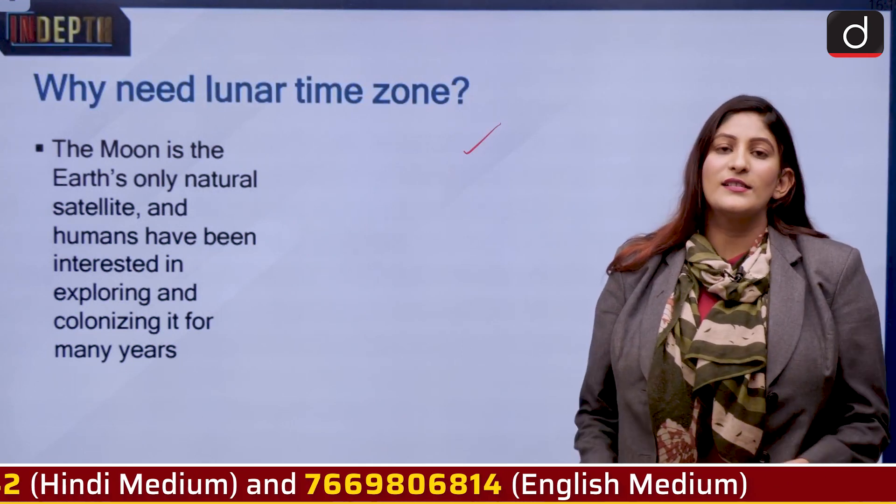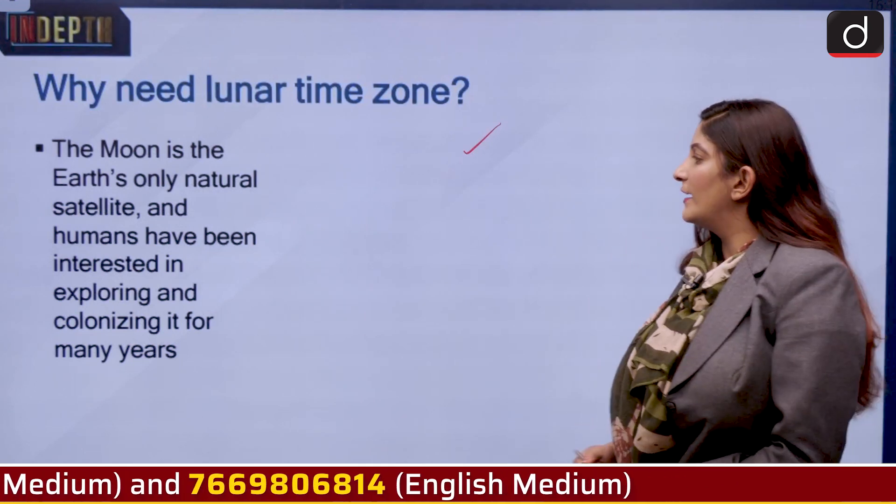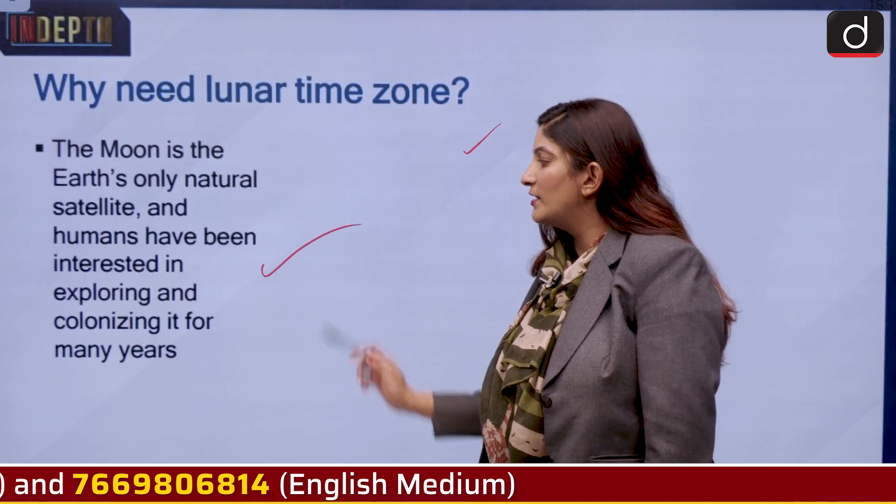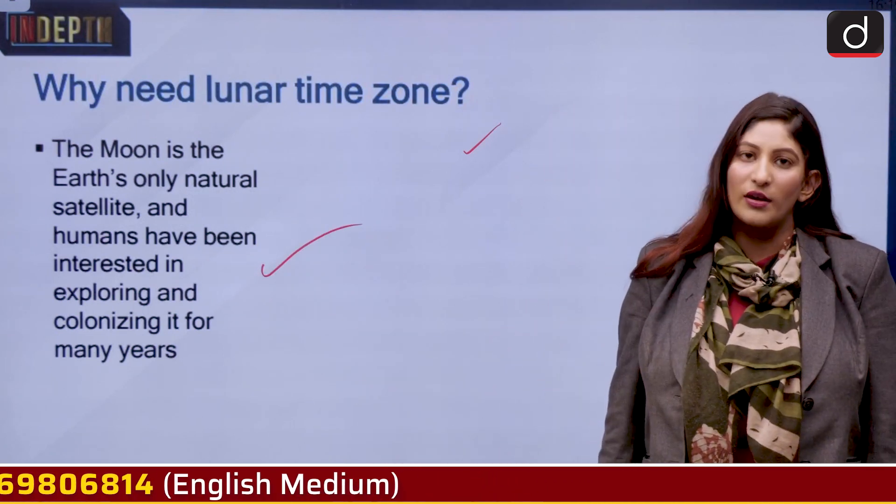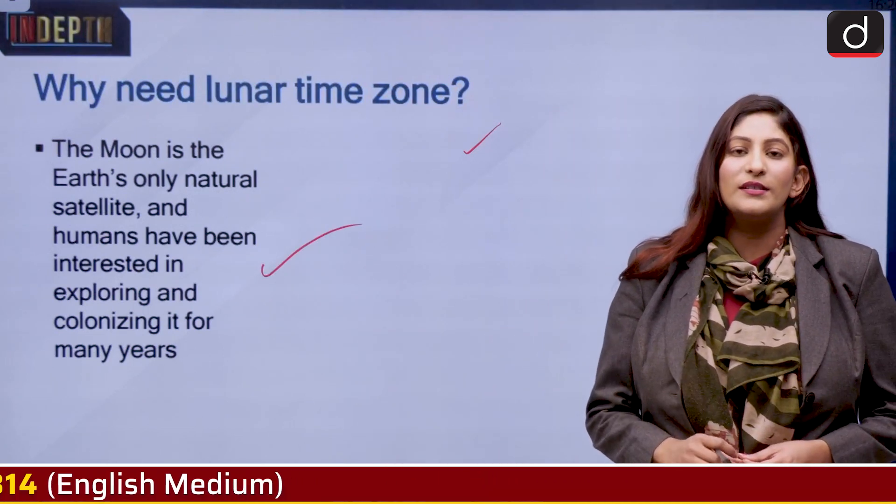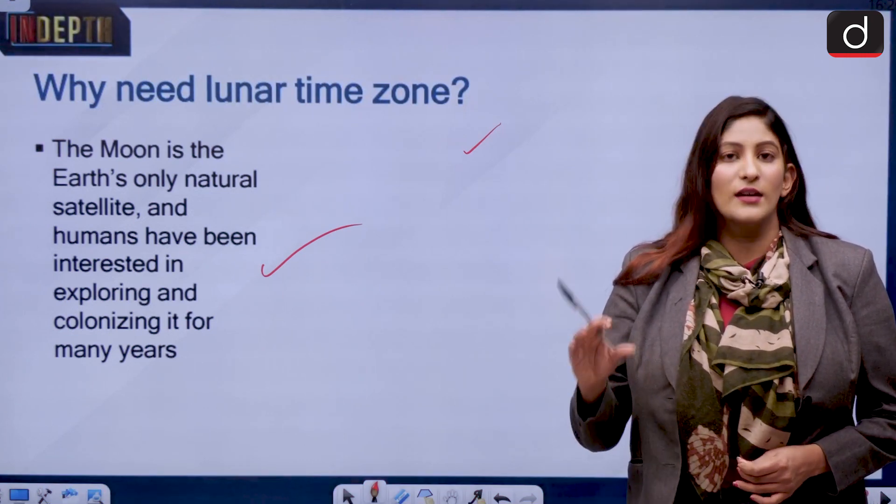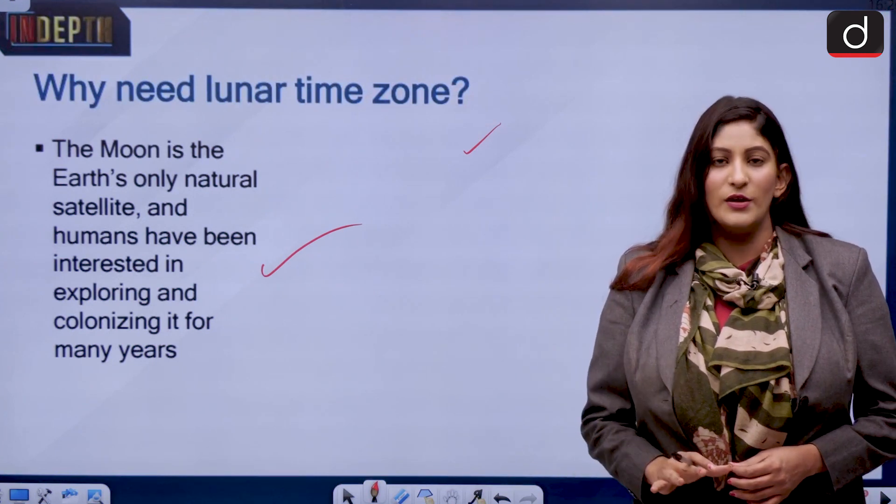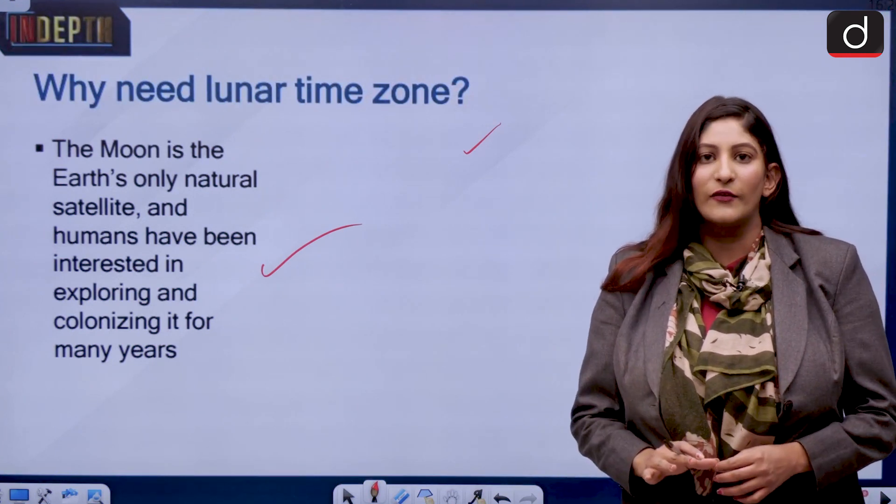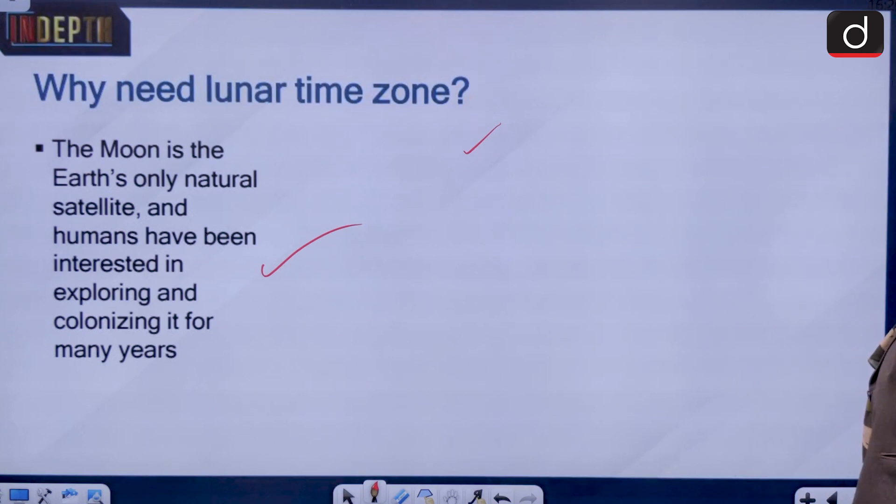The moon is the earth's only natural satellite and humans are interested in exploring it and also colonizing it. Also it is important that we have stations over there so that we can go beyond the current planets that we have already explored. So it would be a shorter distance from there if you compare it from the earth.